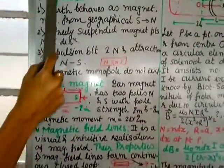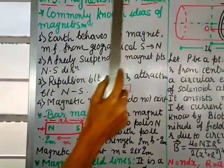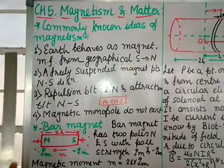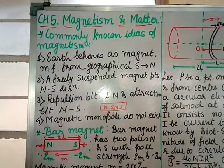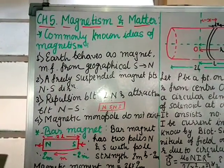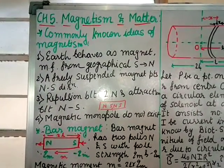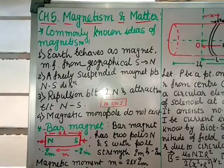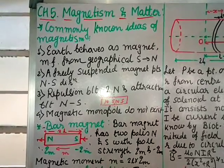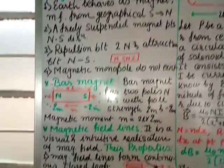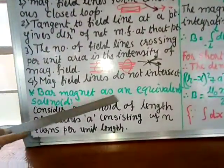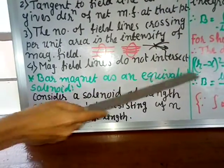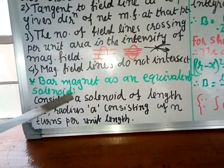Chapter 5: Magnetism and Matter. We have done the history of magnetism, and some common ideas — bar magnet, magnetic field lines and their properties. Today we shall study the bar magnet as an equivalent solenoid.